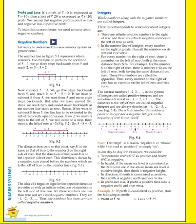Third point: for every number on the right of zero, there is a number on the left of zero at the same distance. The numbers on the right and left of zero have equal distances from zero. For example, the number eight on the right of zero has minus eight on the left of zero at the same distance.